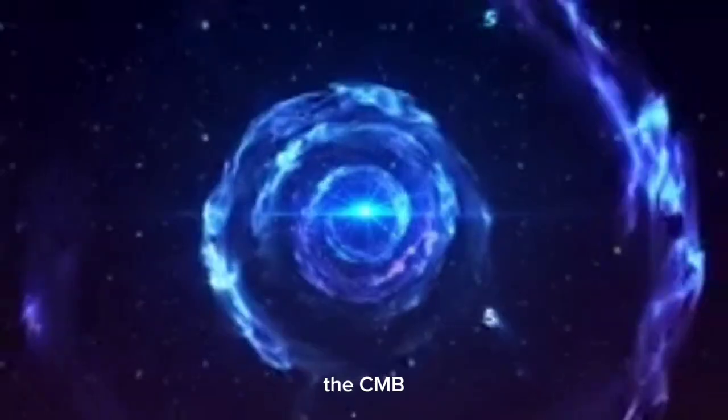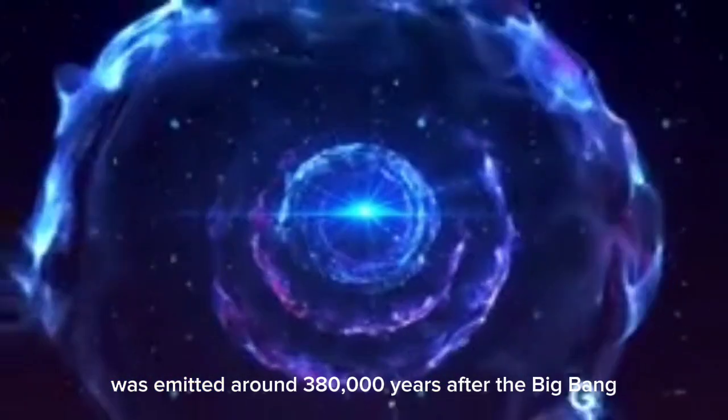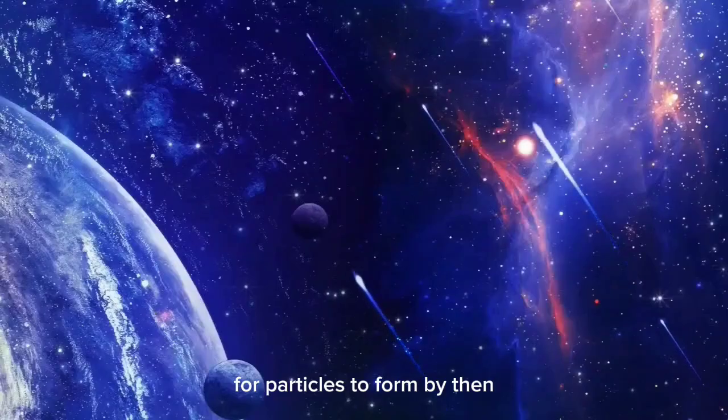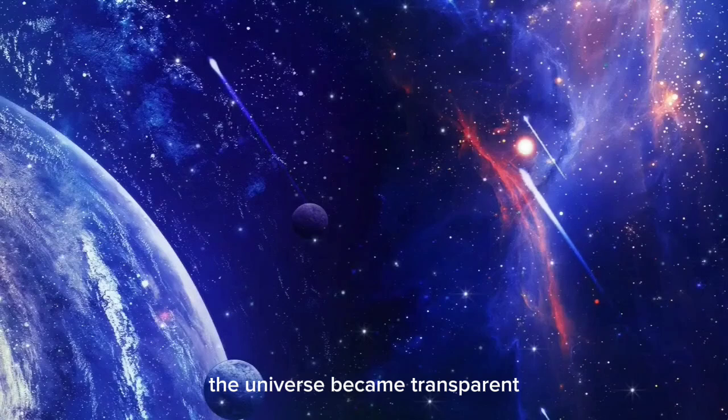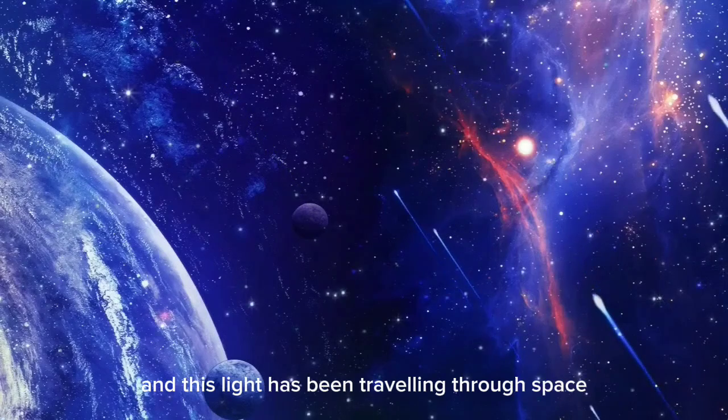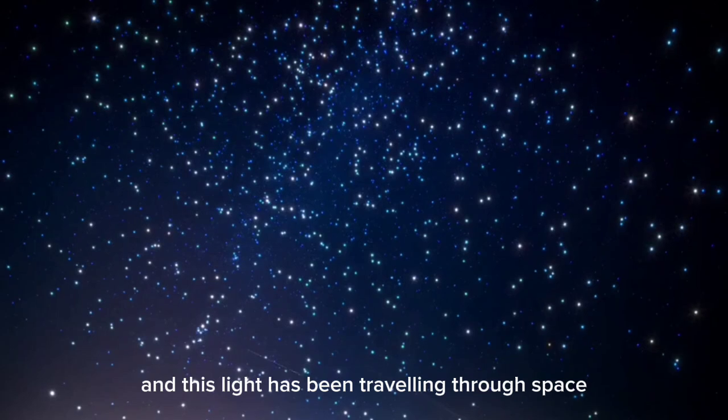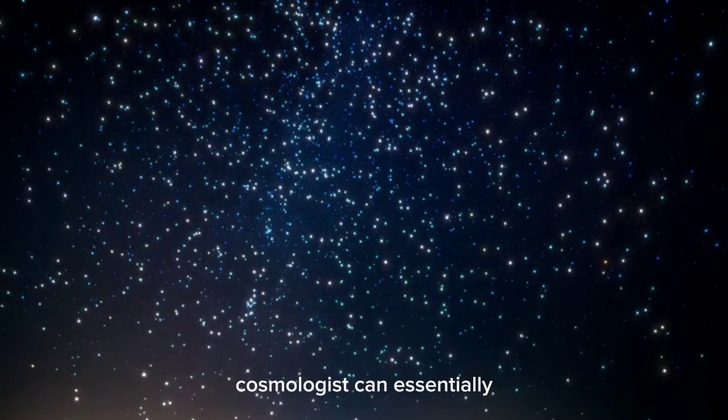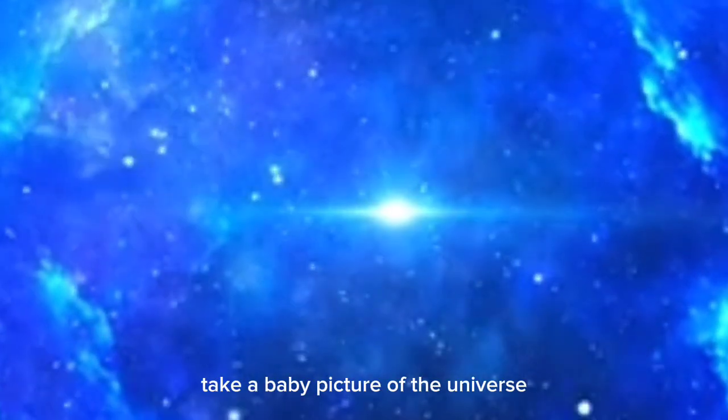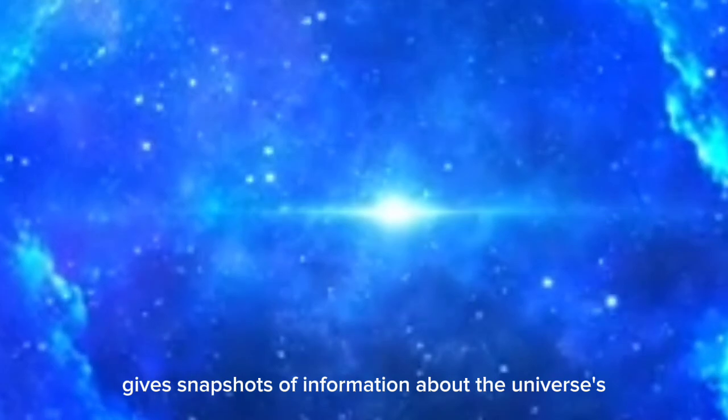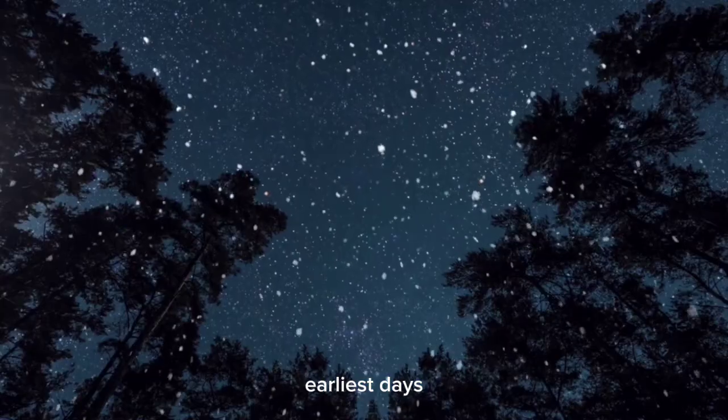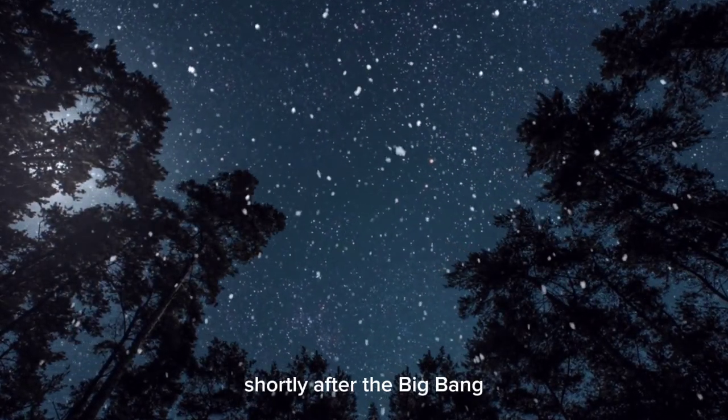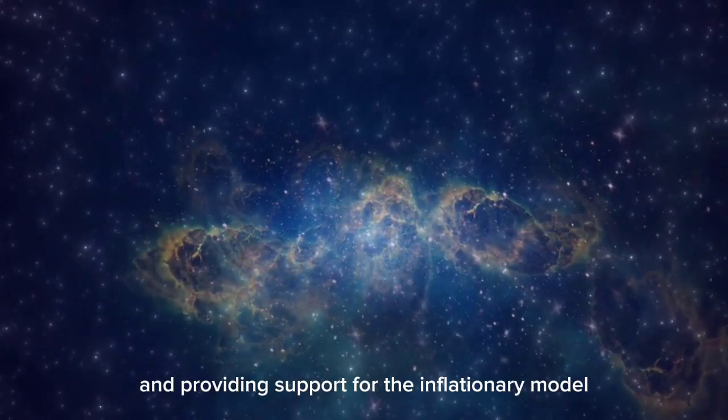The CMB was emitted around 380,000 years after the Big Bang, when the universe cooled sufficiently for atoms to form. By then, the universe became transparent, and this light has been traveling through space ever since. By studying the CMB, cosmologists can essentially take a baby picture of the universe. The light provides snapshots of information about the universe's earliest days, helping scientists understand what happened shortly after the Big Bang and providing support for the inflationary model.